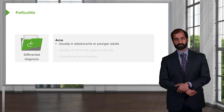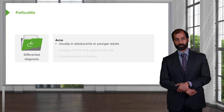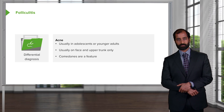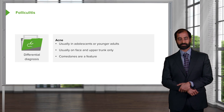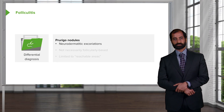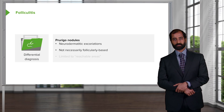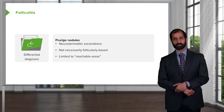For differential diagnoses: acne vulgaris occurs in the pubertal age group, usually on the face and upper trunk only, and has comedones as a feature — not folliculitis, which focuses on the hair follicle unit. Another differential is prurigo nodule, which is more of a neurodermatitic type of excoriation, not necessarily folliculitis-based, and is limited to areas that are reachable by the patient.